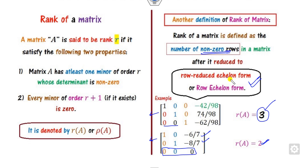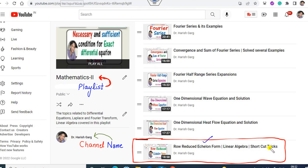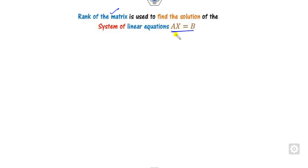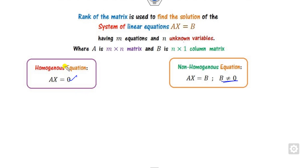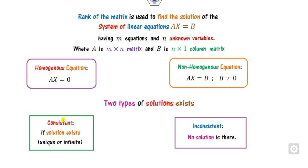To convert a matrix to row reduced echelon form, you can refer to the previous lecture on shortcut tricks available on the channel Dr. Rish Garth. Once the rank is defined, it is used to solve the system of equations AX=B, where A is m×n, and the unknowns are x1, x2, x3, etc. Depending on whether B is zero or non-zero, the system is homogeneous or non-homogeneous, with solutions classified as consistent or inconsistent.